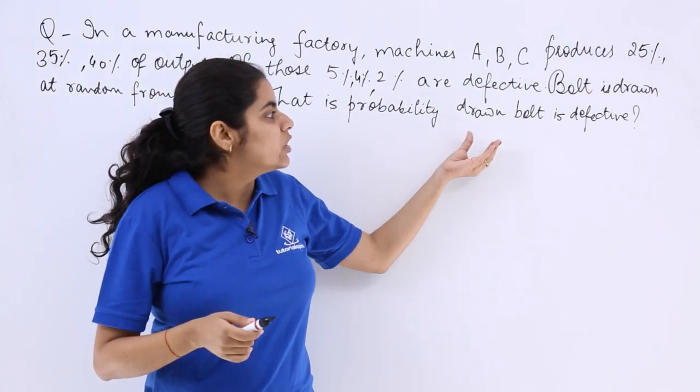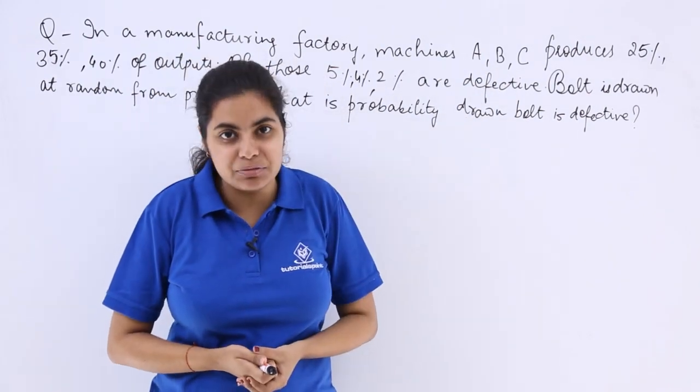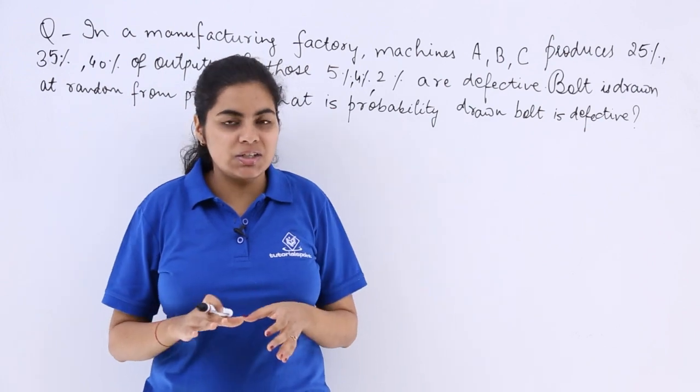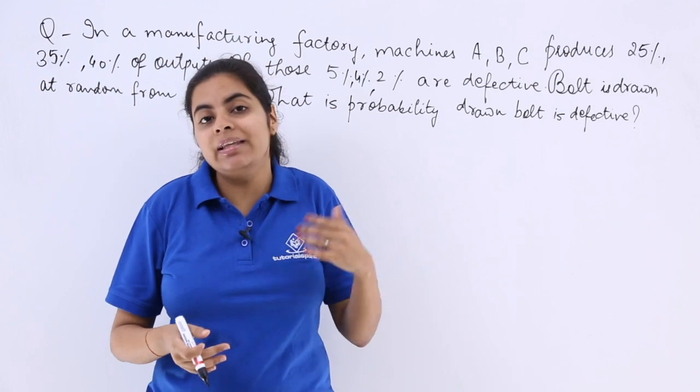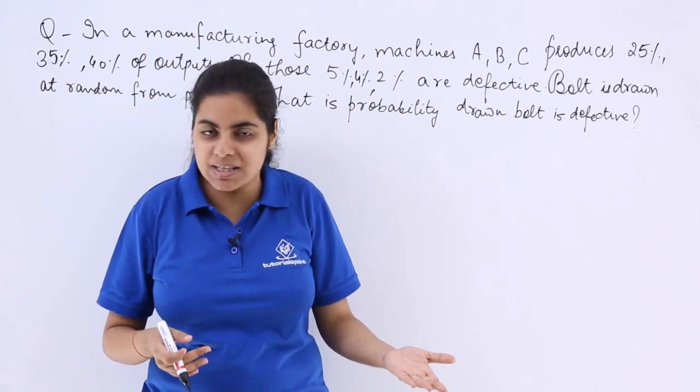Now, what is the probability the drawn bolt is defective? If this question is understood, or if law of total probability is understood by you, you will face no problem in the next topic that you are going to study, which is Bayes theorem.